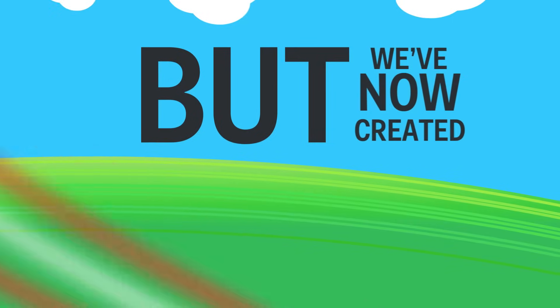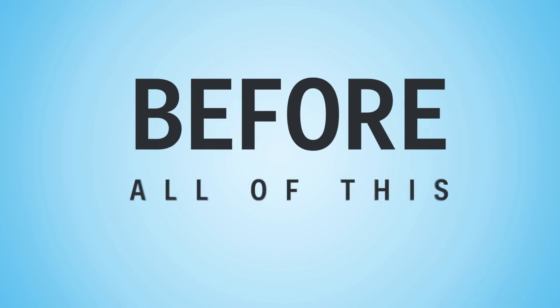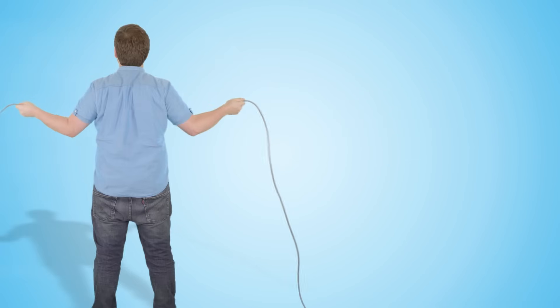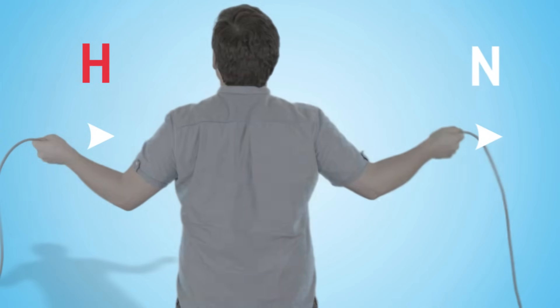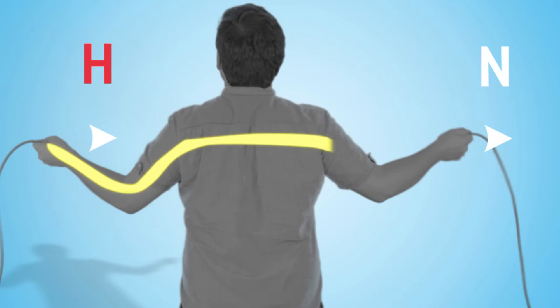But we've now created another problem. Before all of this, the only way to be shocked was if you touched both the neutral and hot wires. In that case, your body would close the electrical circuit, and the voltage would travel through you from one wire to the other.